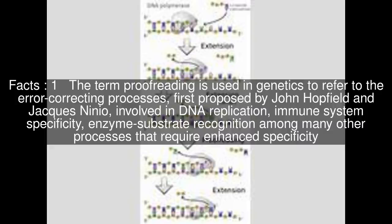The term proofreading is used in genetics to refer to the error-correcting processes, first proposed by John Hopfield and Jacques Nynio, involved in DNA replication, immune system specificity, and enzyme-substrate recognition, among many other processes that require enhanced specificity.